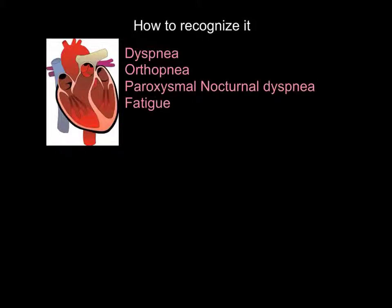Dyspnea has 'dys' from the Greek for bad, and 'pnea' from the Greek for breathing — so 'bad breathing' — conveying that these patients struggle to breathe. Orthopnea comes from 'ortho' meaning straight or standing, and 'pnea' for breathing, so they mainly struggle more to breathe when they're lying down or at an angle.